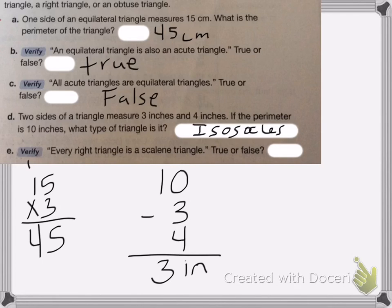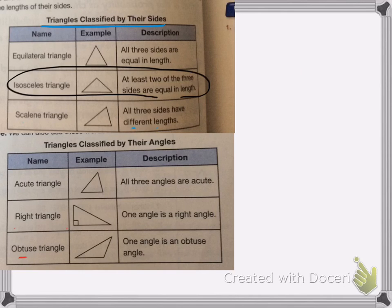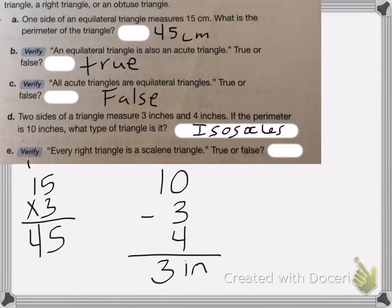All right. On the last one, every right triangle is a scalene triangle. True or false. Again, right triangle just means that one angle is a right angle. So it could be an isosceles or a scalene triangle. So this one is false.